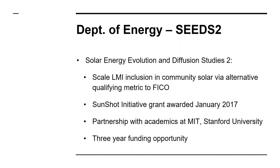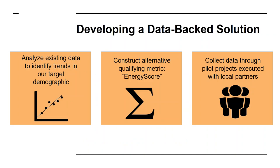The SunShot grant period began in January 2017, in partnership with academics at MIT and Stanford University, and is a three-year funding opportunity. The project's trajectory is to develop a data-backed solution to LMI exclusion from community solar. The first step is to analyze an existing dataset to identify trends in the target demographic — looking at credit score and utility payment history to analyze if there is a correlation, and whether that correlation is stronger for certain demographics.